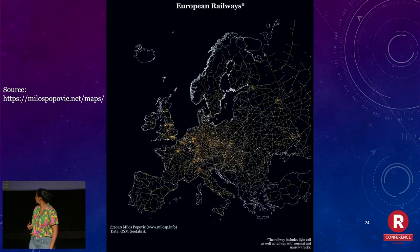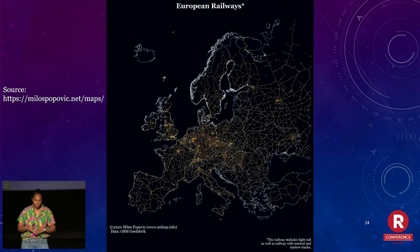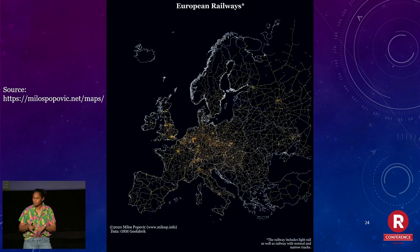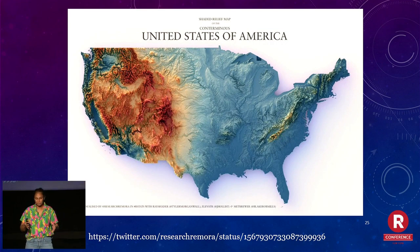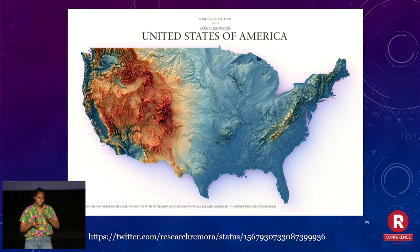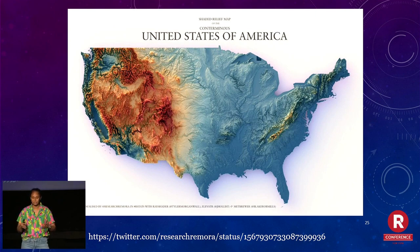This is using OpenStreetMap data. This guy, Milos Popovic, makes these incredibly stunning maps in R — his website is there, and I highly suggest you check it out for his visualizations and tutorials. And this one — my jaw dropped when I saw it. I didn't know you could make relief maps like this in R, but this uses the RayShader package. The title is beautiful, he has the source at the bottom and the package he used.